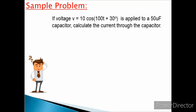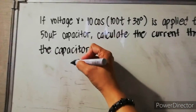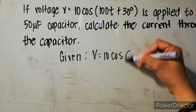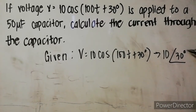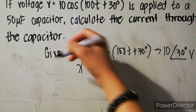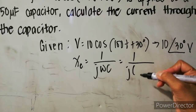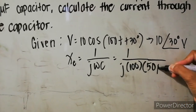For our next problem, voltage V is equal to 10 cosine of 100t plus 30 degrees is applied to a 50 microfarad capacitor. Calculate the current through the capacitor. In phasor form, V is 10 angle 30 degrees volts. The capacitive reactance X sub C equals one over j omega C, which is one over j times 100 times 50 microfarads.